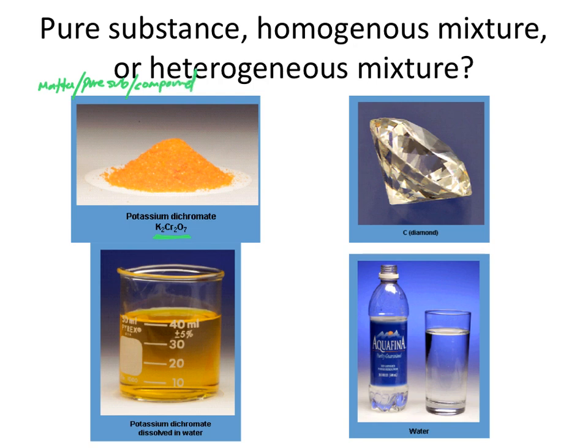In the next example, we have a diamond. They've given us the element that makes up the substance. Once again, we start with matter, and we have a pure substance.